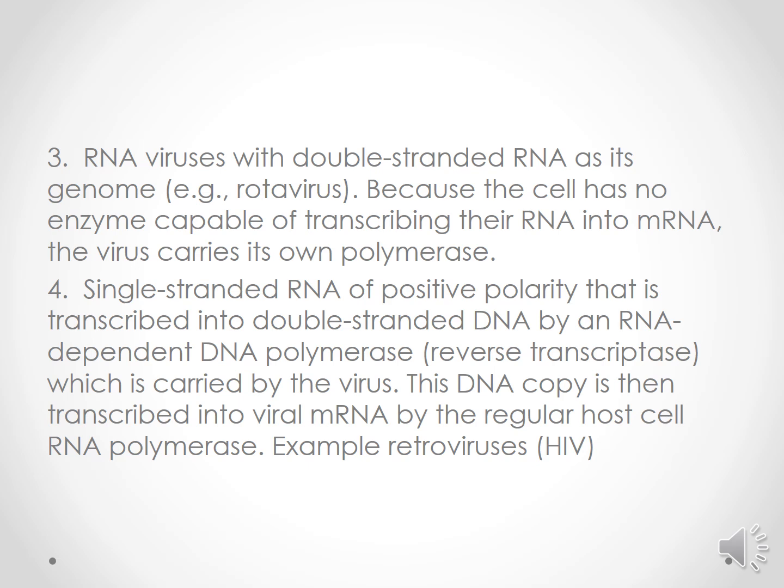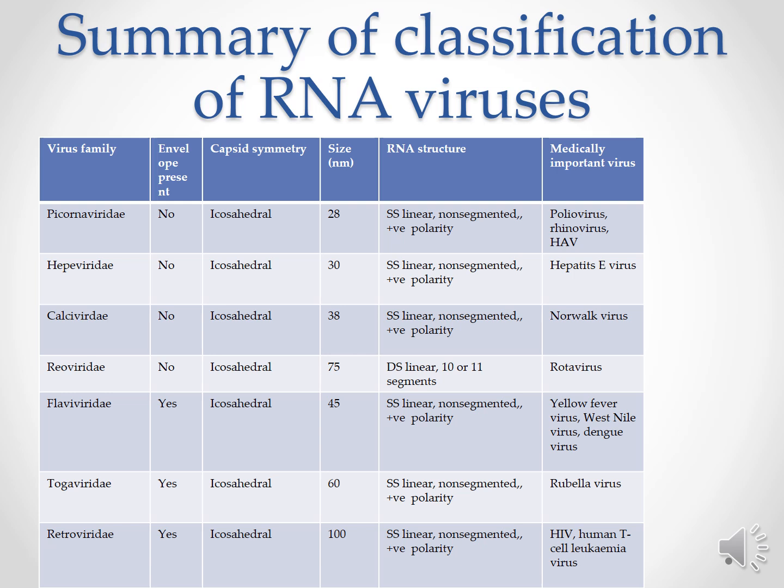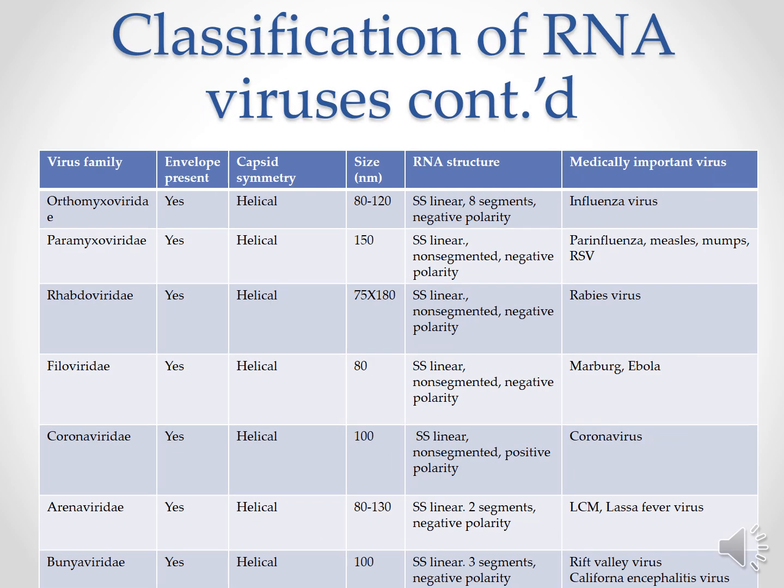RNA viruses with double-stranded RNA as their genome: because cells do not have any enzyme capable of converting their RNA into mRNA, the RNA virus carries its own polymerase. Single-stranded RNA of positive polarity in retroviruses is transcribed into double-stranded DNA by RNA-dependent DNA polymerase, that is reverse transcriptase, carried by the virus. The DNA copy is then transcribed into viral mRNA by the regular host RNA polymerase. Example: retrovirus.